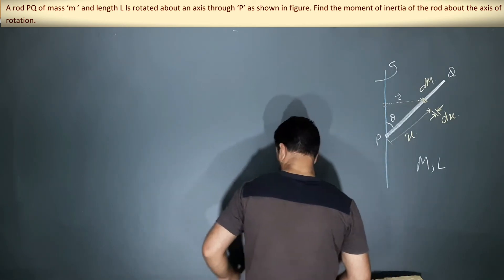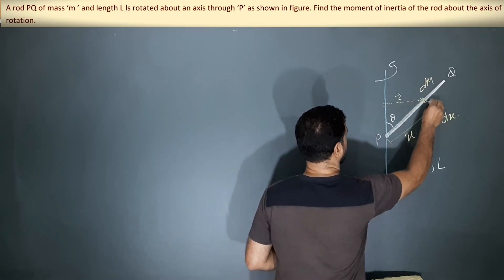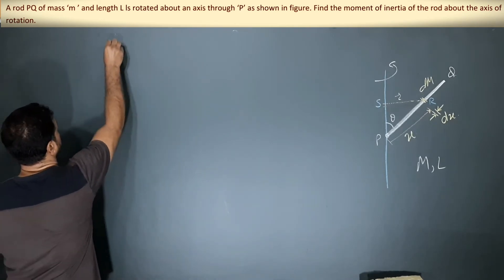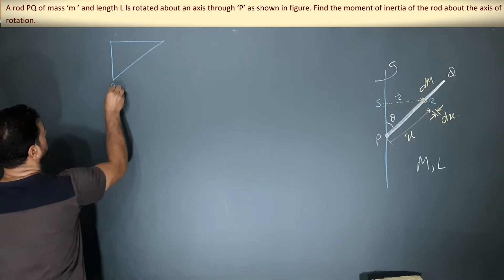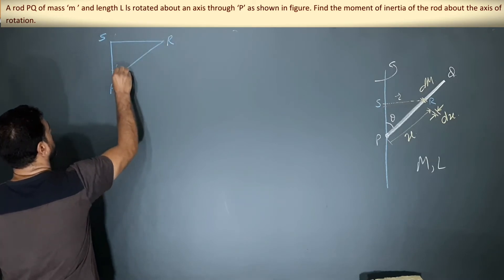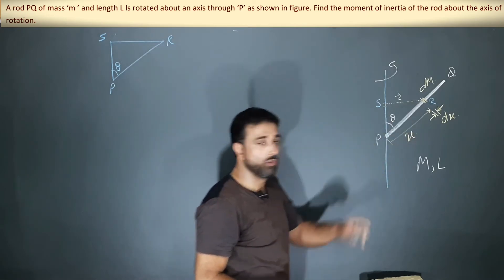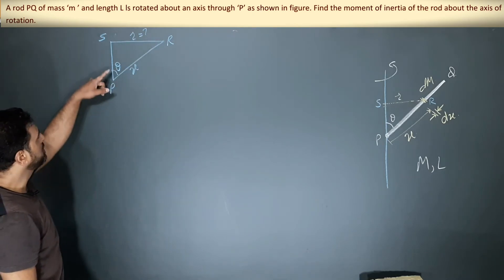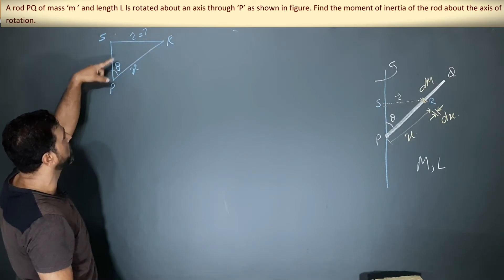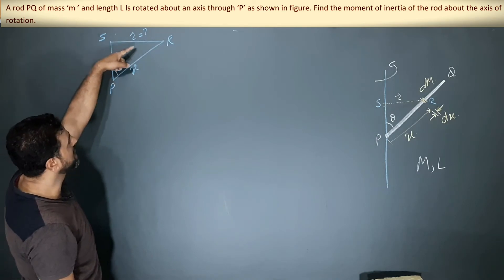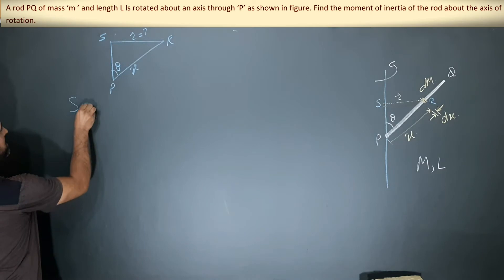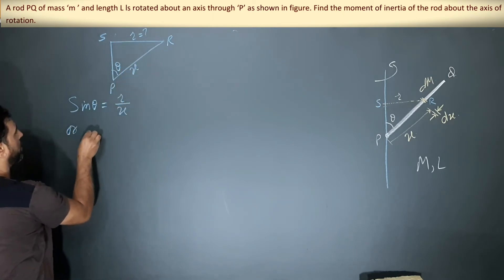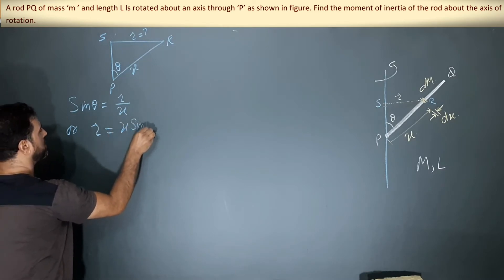Let me label the points: P is the pivot, the element position is S, and R is the foot of the perpendicular. Consider triangle PSR, where the angle at P is theta, the side PR is x, and R is the perpendicular distance from the axis. From this triangle, R is equal to x·sin theta.